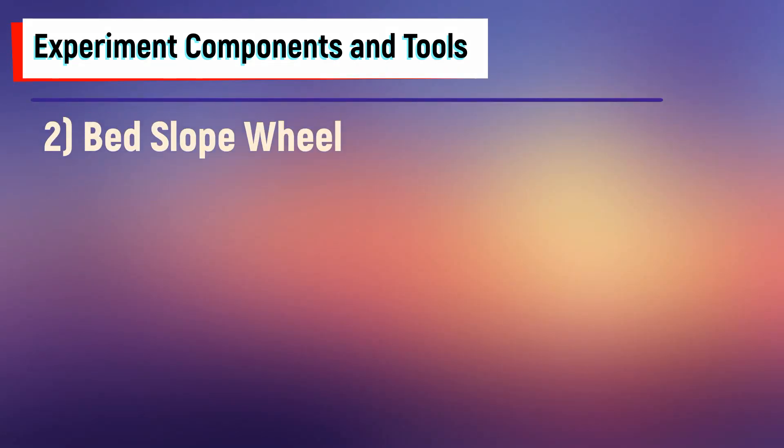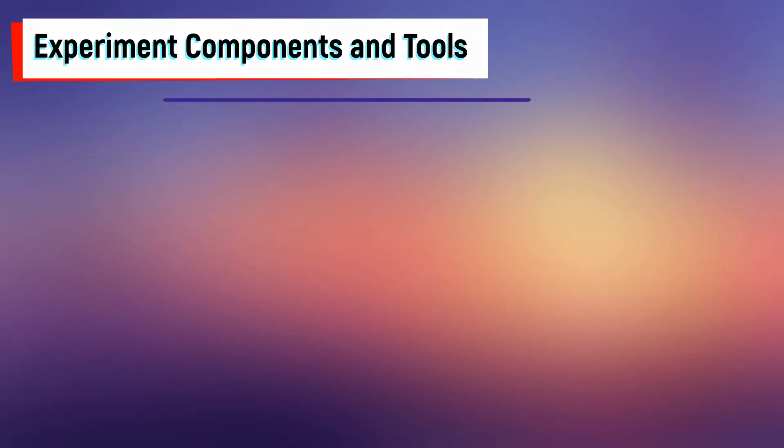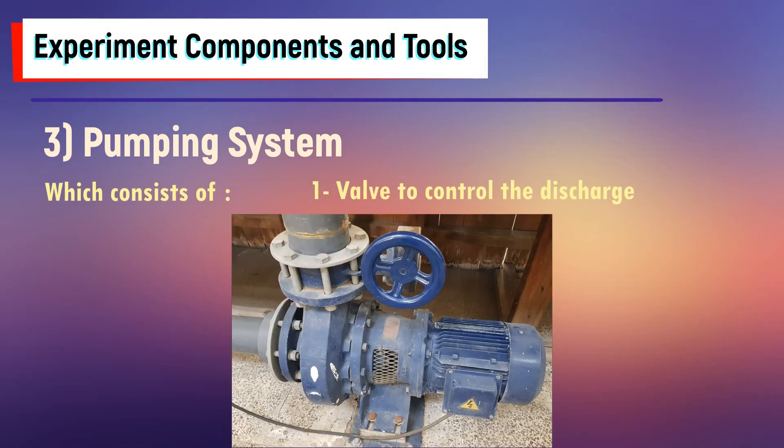Number two, the bed slope wheel which is used to adjust the channel slope. Number three, the pumping system which consists of a valve to control the discharge.